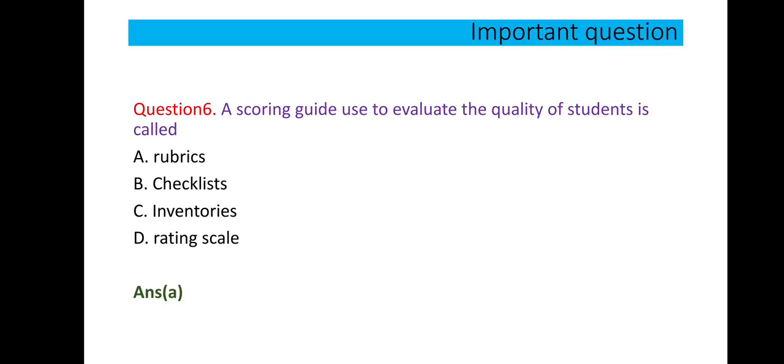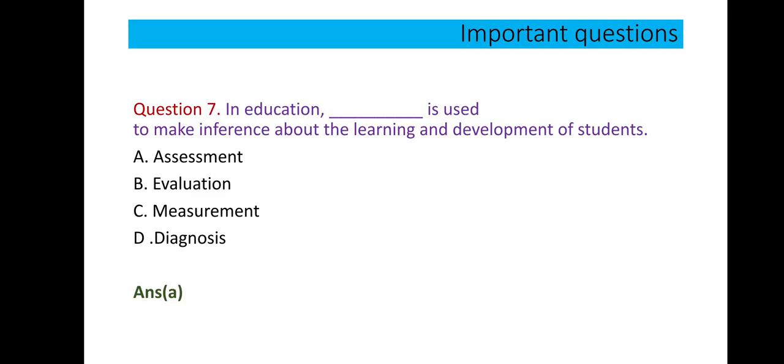Question number 6: A scoring guide used to evaluate the quality of students is called rubrics. It is the definition of rubrics - a scoring guide used to evaluate the quality of students is called rubrics. So option A is correct. It's a direct question.